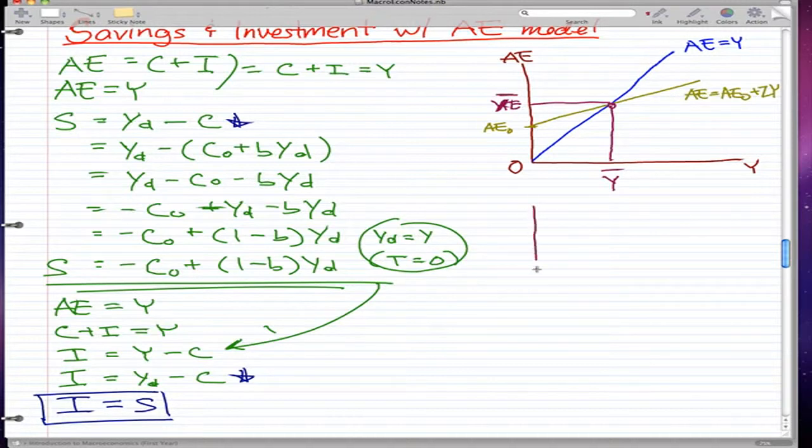So then let's draw another graph. This would be savings and investments, the vertical line. And this would be Y.